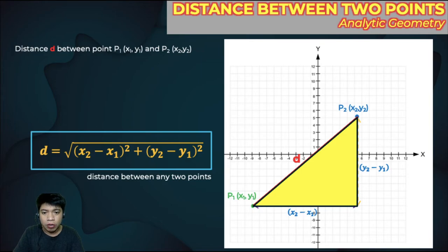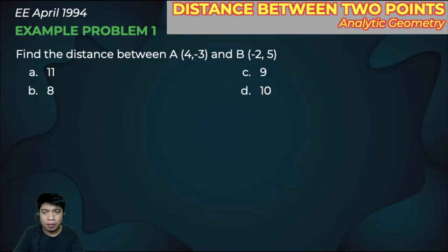Let's solve this problem. This problem came from the electrical engineering board exam during April 1994. Find the distance between A, which is 4 comma negative 3, and B, negative 2 comma 5.